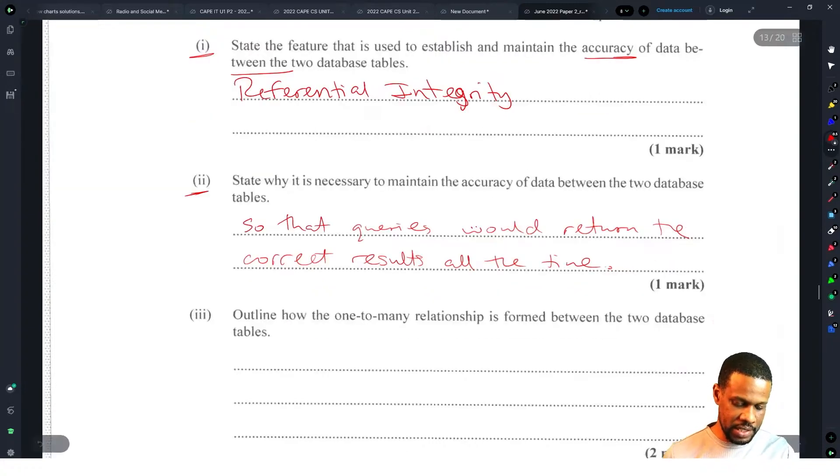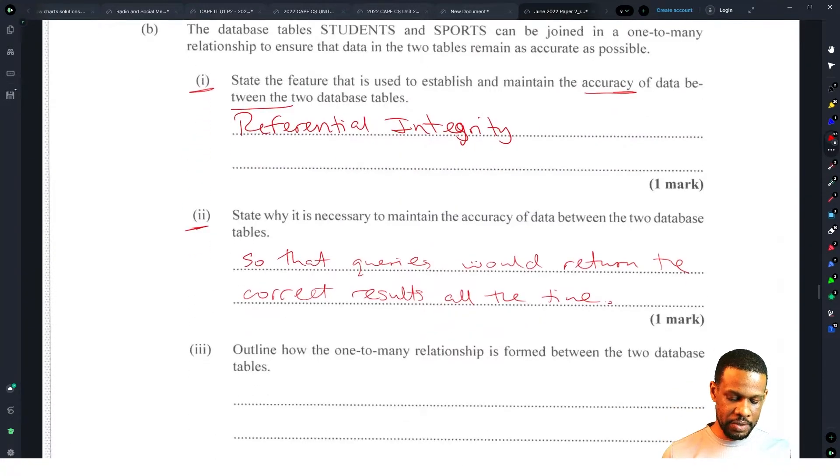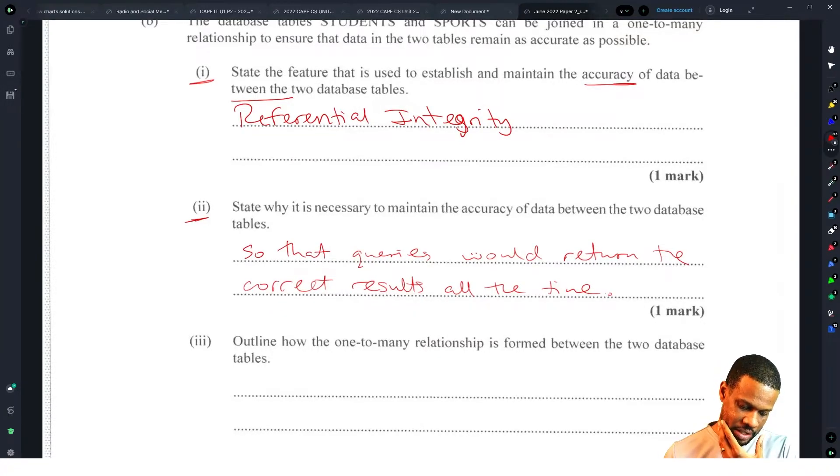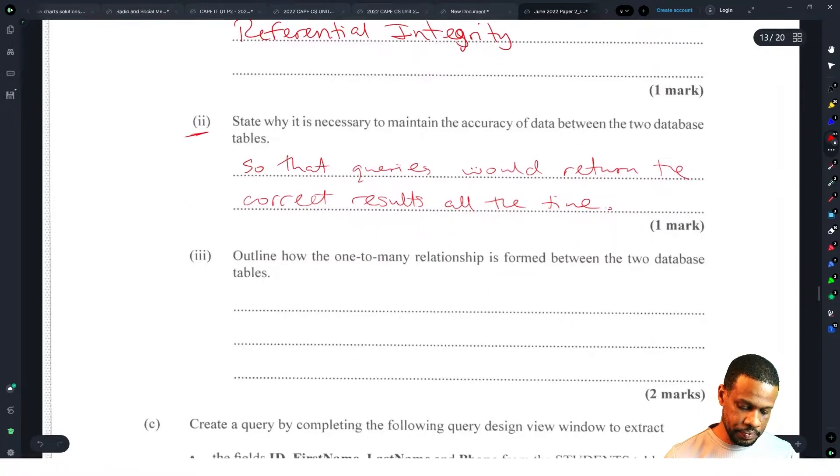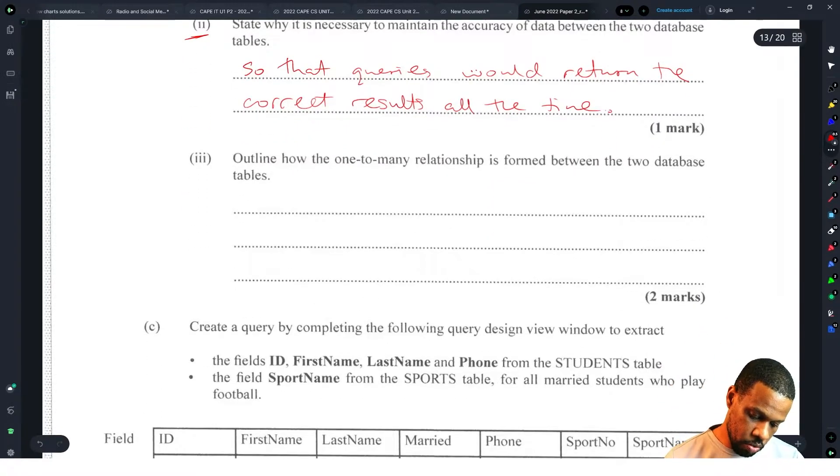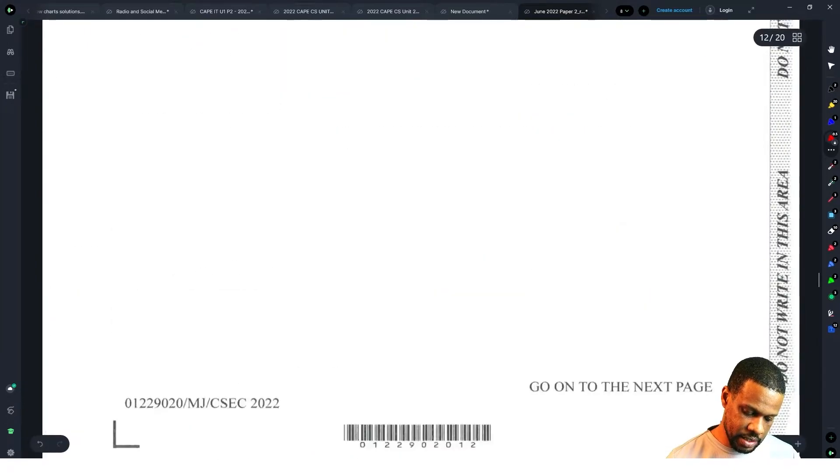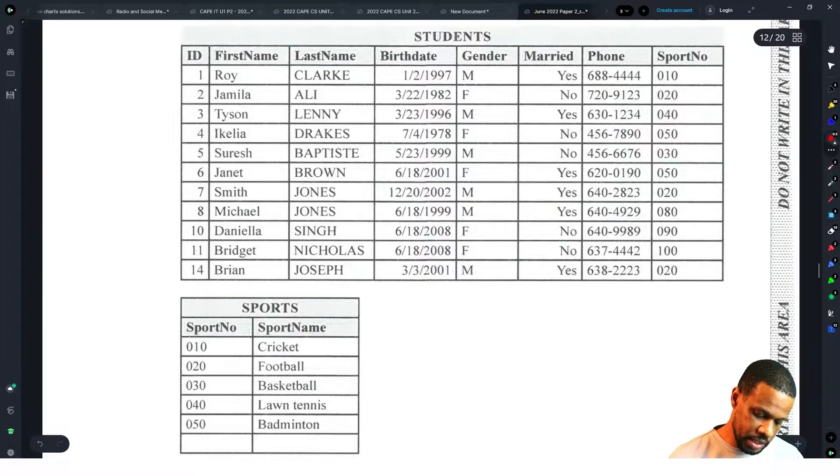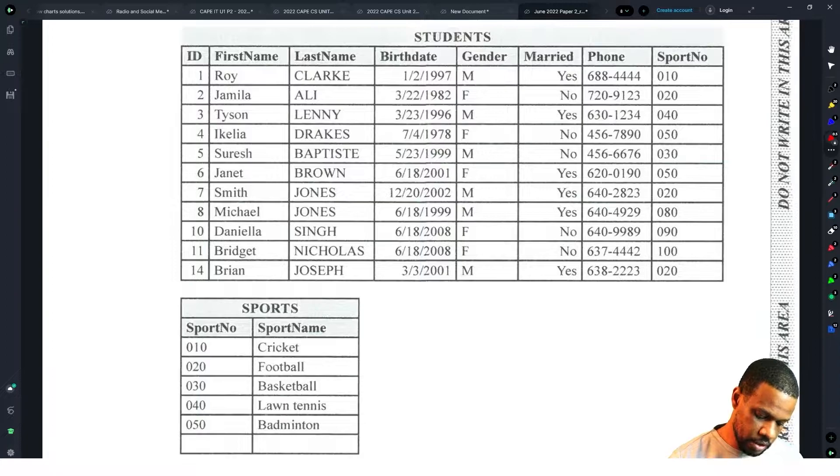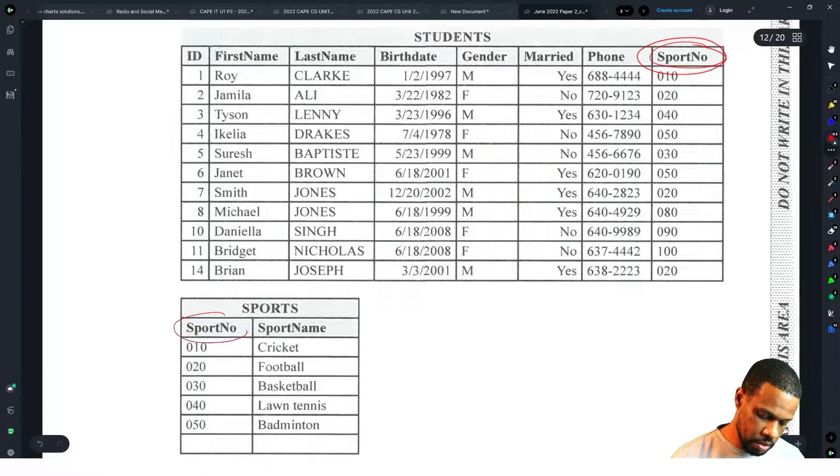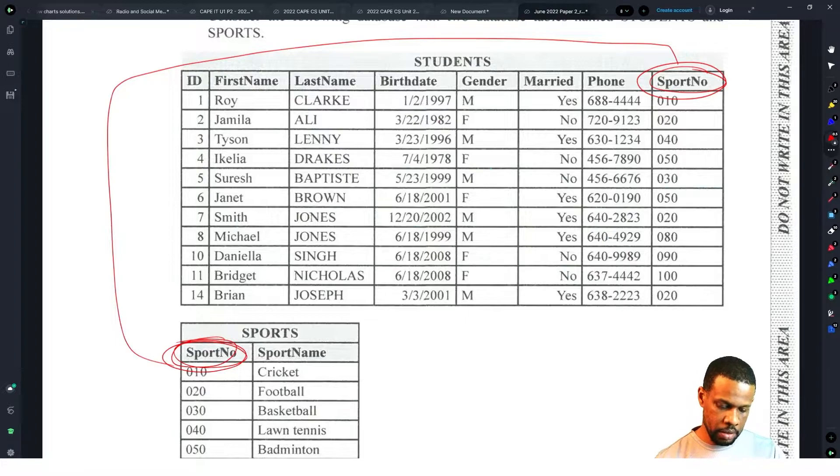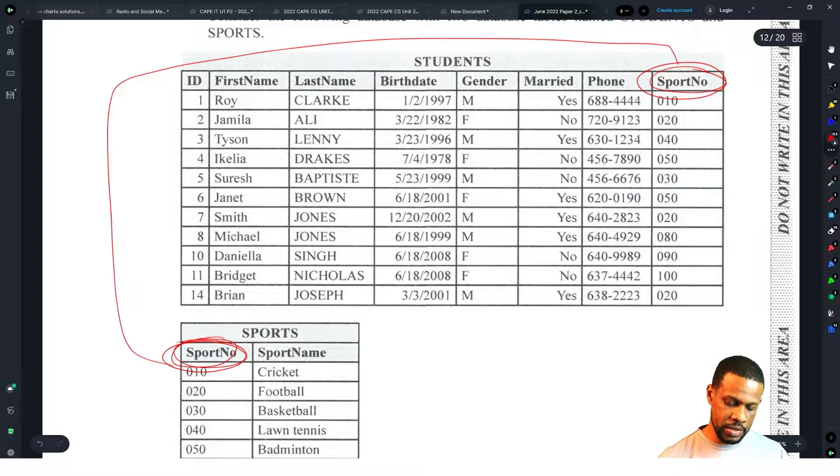Primary key is not the answer there. Primary key is just to make sure that records are unique, but to establish and maintain accuracy, when they say between the two tables, clearly it had to have a relationship. When you have that relationship, you have to enforce referential integrity. Outline how a one-to-many relationship is formed between the two databases - you have to show that the sport number here relates to the sport number here. The relationship is one sport has many students.